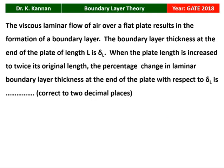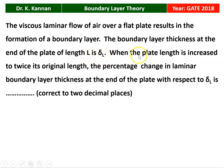The next question is from the GATE 2018 question paper. The viscous laminar flow of air over a flat plate results in formation of a boundary layer. The boundary layer thickness at the end of the plate of length L is equal to delta L. When the plate length is increased to twice its original length, the percentage change in the laminar boundary layer thickness at the end of the plate with respect to delta L is to be determined.